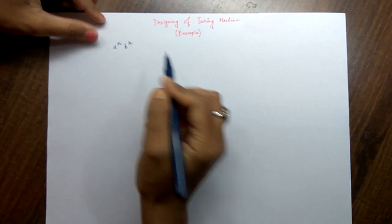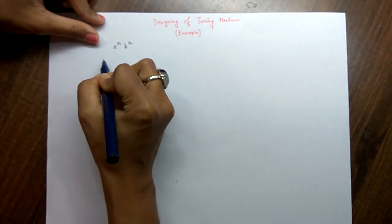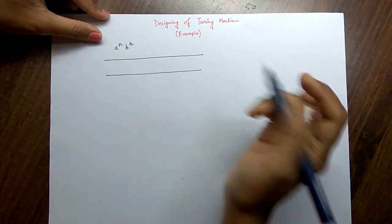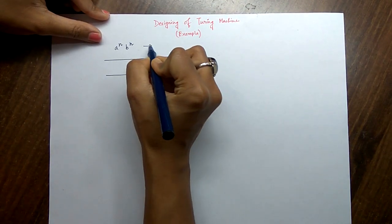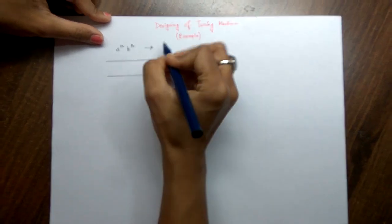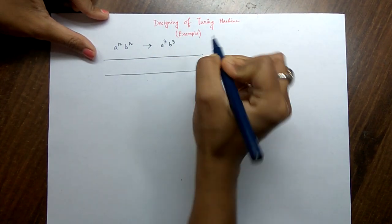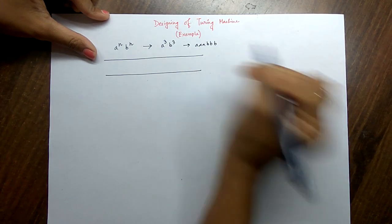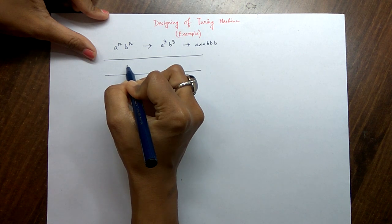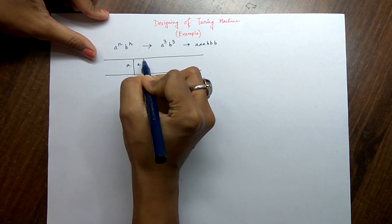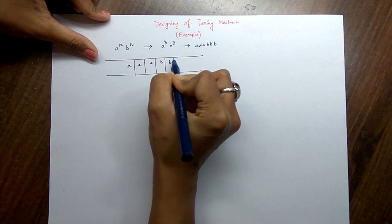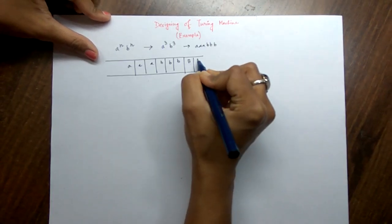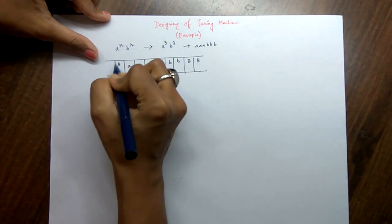Now, if we are having a to the power n and b to the power n and we want to design it using the Turing machine, we can have a tape. Let us design the tape where we take a sample of a to the power n b to the power n. A sample of this string is a-cubed b-cubed, that means a a a and b b b. So I am writing a a a and b b b, and then on the right hand side we consider the blank space.